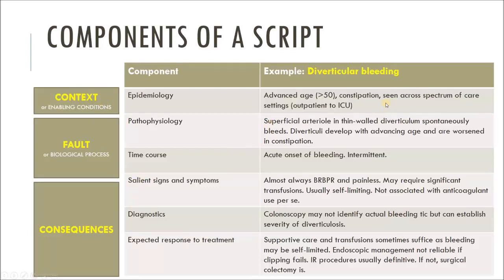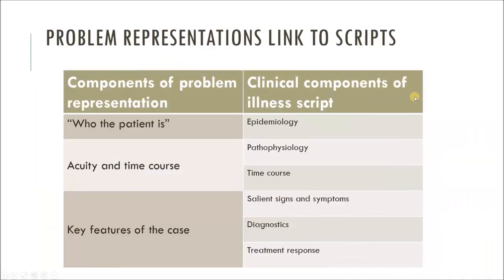Here's an example of my illness script for diverticular bleeding — I wrote this off the top of my head and it's actually fairly robust because I've seen patients across the spectrum: from a very simple self-limited episode of red blood per rectum to patients I had to send to surgery for a colectomy because the bleeding would not stop. This also aligns with problem representation, which entails who the patient is, the acuity and time course, and the key features. When we ask learners to give a summary statement, those components align perfectly with the clinical components of an illness script.